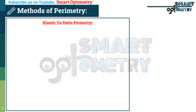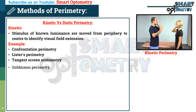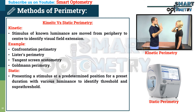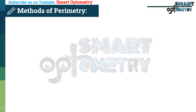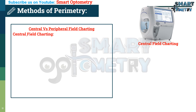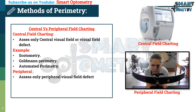Methods of perimetry. Method 1 — Kinetic vs. Static perimetry: In kinetic perimetry, stimuli of known luminance are moved from periphery to center to identify visual field extension. Examples include confrontation perimetry, Lister's perimetry, tangent screen scotometry, and Goldmann perimetry. Static perimetry presents a stimulus at a predetermined position for a preset duration with various luminance to identify threshold and supra-threshold. Method 2 — Central vs. Peripheral field charting: Central visual field charting assesses only the central visual field or visual field defects (examples: scotometry, Goldmann perimetry, automated perimetry). Peripheral visual field charting assesses only peripheral visual field defects (examples: confrontation perimetry, Lister's perimetry).